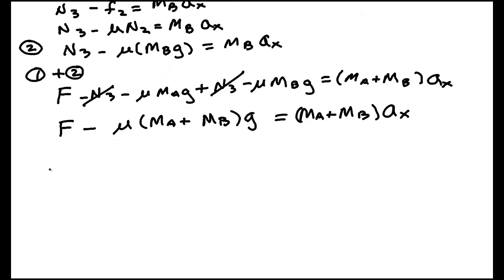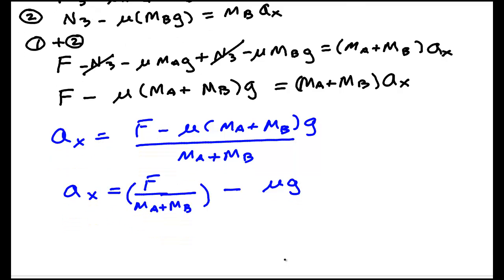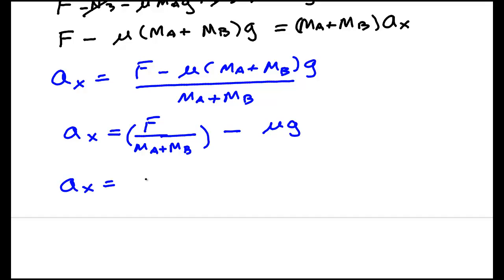To find the acceleration now, you have F minus μ times (MA plus MB) times G, divided by (MA plus MB). So AX is equal to, and by the way, you might even want to simplify this. Kind of neat if you do that. You can see this would be like the acceleration that the force would have if there was no friction. And then the frictional effect is minus μG. AX is equal to 300 newtons over 1.8 kilograms minus 0.3 times 9.8 meters per second squared.